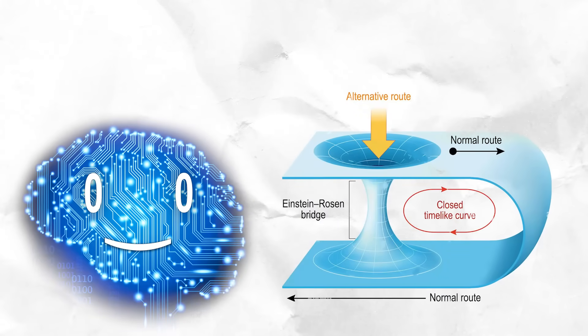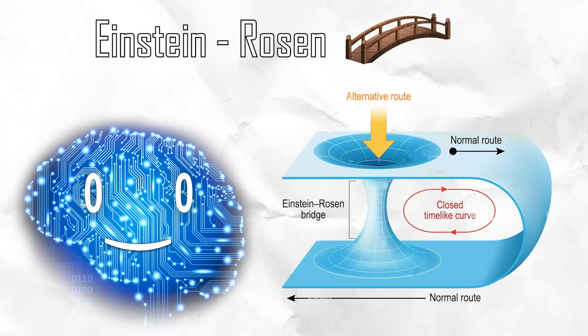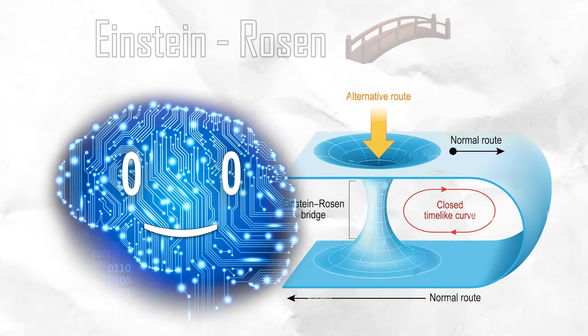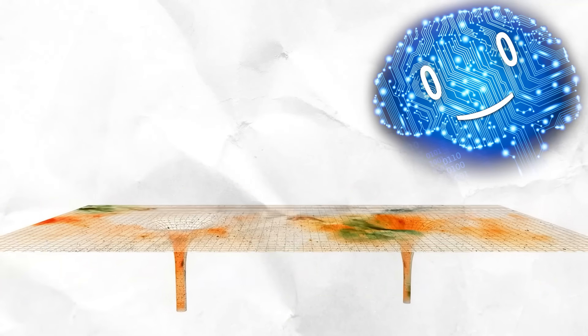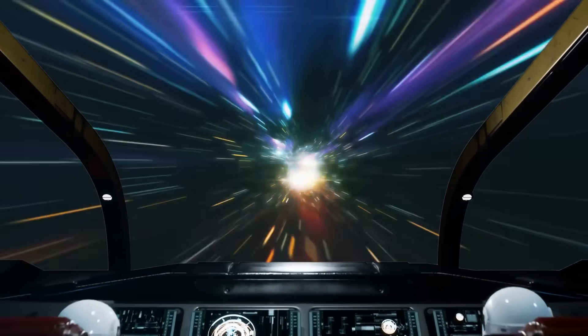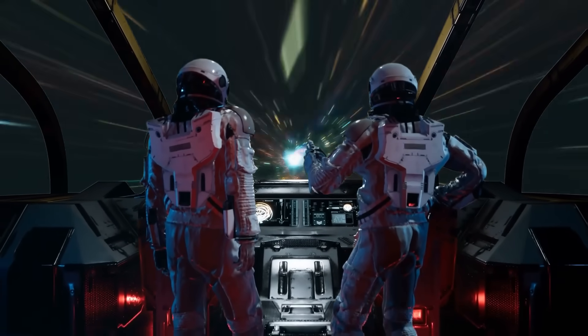Jokes aside, this type of wormhole is called an Einstein-Rosen bridge which is just one implication of general relativity that can result in the connection of different points in space-time. Other variants of wormholes provide a better chance of getting the sick sci-fi space travel we desire.